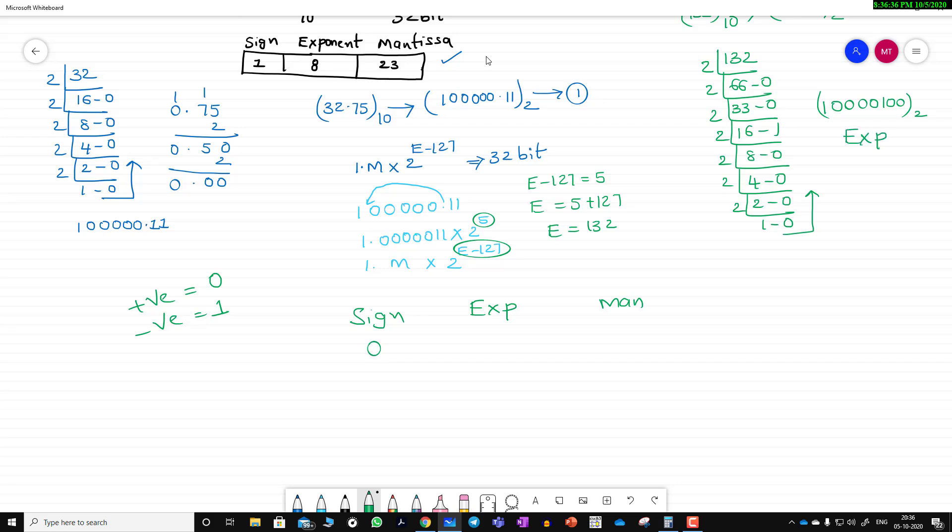What about the mantissa? This is 0000011, and the rest you can pad with 0s because the mantissa is 23 bits. The exponent is 8 bits: 1, 2, 3, 4, 5, 6, 7, 8, and the sign bit is 1 bit. This is the representation of 32-bit, which means single precision of 32.75.